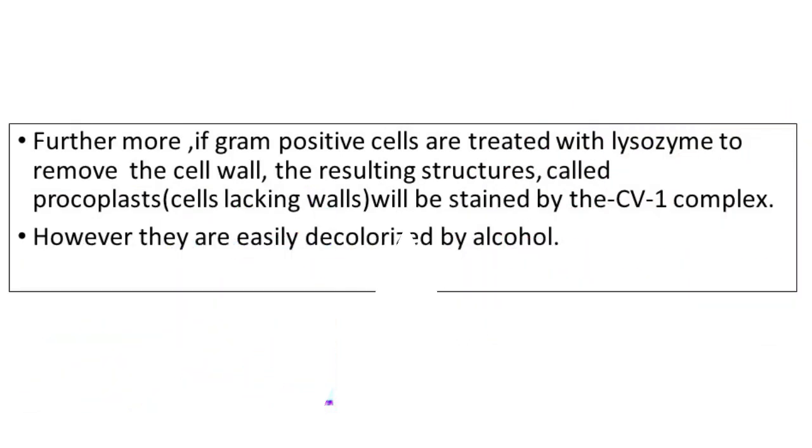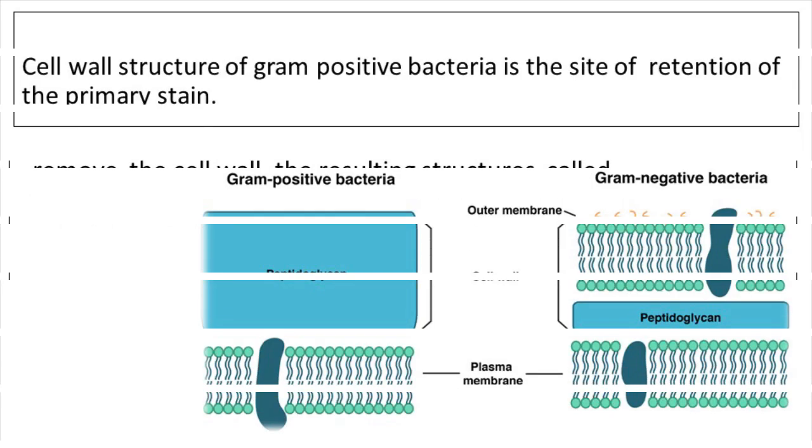Furthermore, if Gram positive cells are treated with lysozyme to remove the cell wall, the resulting structures called protoplasts will be stained by the crystal violet-iodine complex. However, they are easily decolorized by alcohol. Therefore, the cell wall structure of Gram positive bacteria is the site of retention of the primary stain.